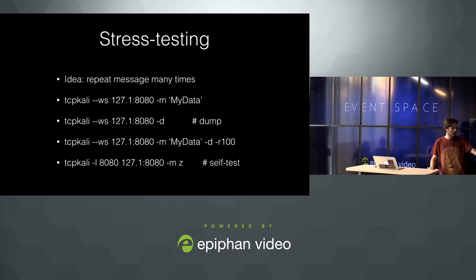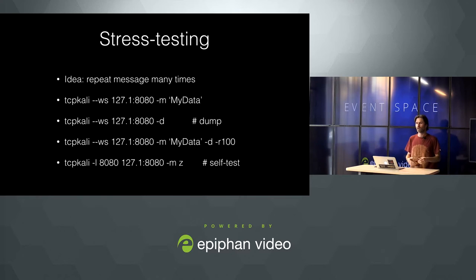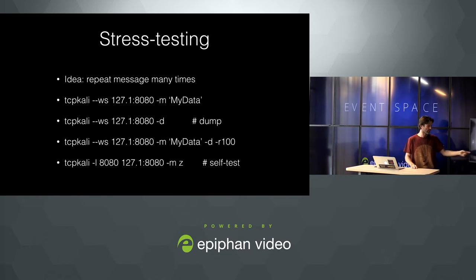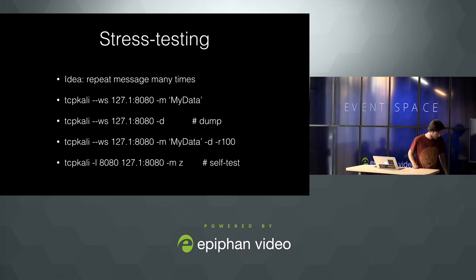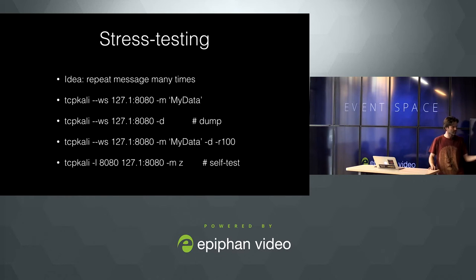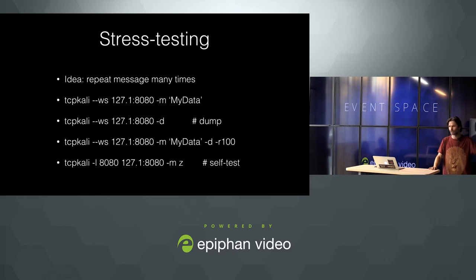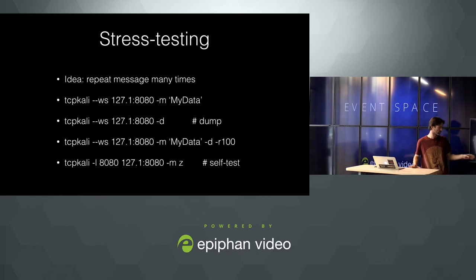Here we are using minus D, which means dump. The dump allows you to discover what we are actually sending — what we are writing into the socket and what is being received from the socket in a formatted way. It doesn't make sense to ask TCP-cali to drive a lot of traffic and dump it to the screen without specifying a rate, because the default rate is as fast as possible and your screen will be filled.